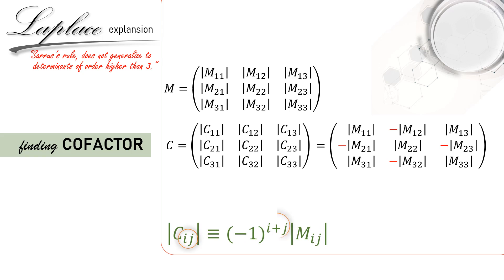So cofactor of a specific element will be equal to its minor if the summation of its row dimension and column dimension results in an even number. When the result is odd, cofactor of such element will be the negative of its minor. Look here, C12 equals to minus M12. Why? Because I plus J here is 1 plus 2, which is equal to 3, an odd number. Similarly, C21, C23, and C32 are all negatives, all negatives of their corresponding minors because the summation results are odd.